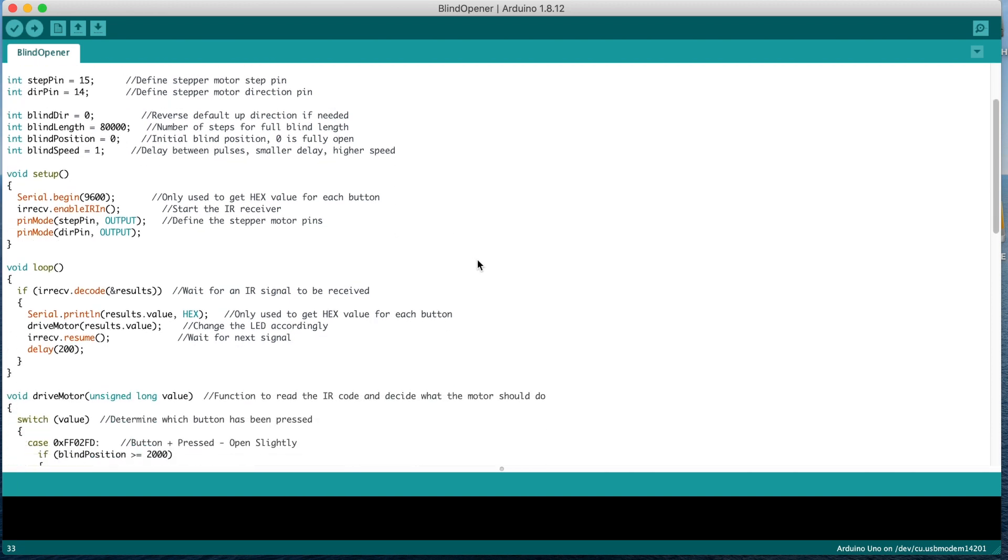In the setup function, we start the serial communication. This is initially used to get the infrared codes from your remote in order to add them to the code and this can be commented out once you've done this. We then start the infrared receiver and assign the motor driver output pins.